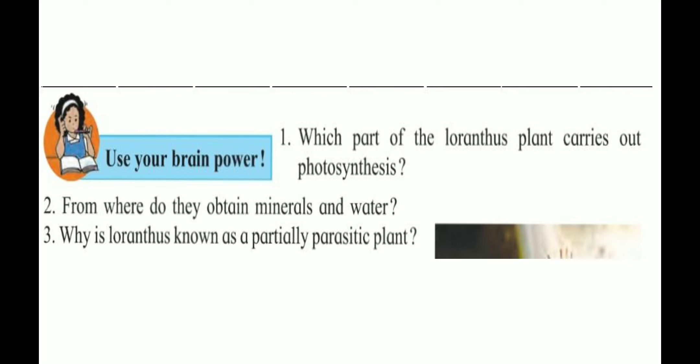Loranthus leaves are green in color, so they can do photosynthesis and prepare their own food. But loranthus takes shelter on the host plant and absorbs water and minerals from it. That is why it is called a partially parasitic plant.